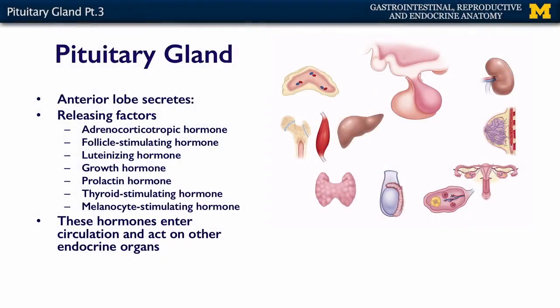Here are the peptides and hormones released from the anterior pituitary. The hypothalamus secretes releasing factors into the pituitary, and these are the releasing factors that the pituitary then secretes to all the other organs: adrenocorticotropic hormone, follicle-stimulating hormone, luteinizing hormone, growth hormone, prolactin, thyroid-stimulating hormone, and melanocyte-stimulating hormone. These hormones enter circulation and act on your other endocrine organs to regulate their function. So we've talked about how the hypothalamus regulates both the anterior and posterior lobes of the pituitary, and how pituitary hormones regulate the rest of the endocrine glands.